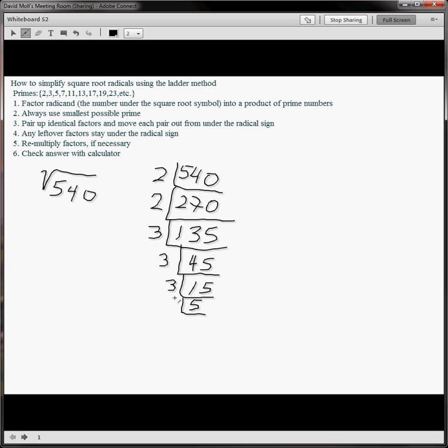5 is prime. So this is one of those. We're going to circle this pair of 2's and this pair of 3's. And then there's a 3 and a 5 that are still left underneath the radical sign.